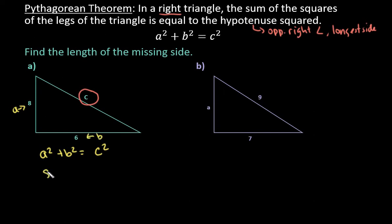And I'm just going to let this one be A and this one be B. So I'm going to say that 8 squared plus 6 squared is equal to C squared. So 8 squared gives me 64 plus 36 equals C squared.